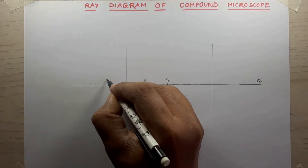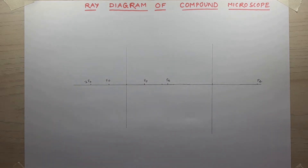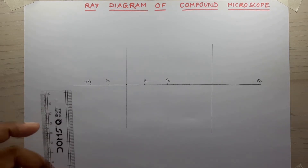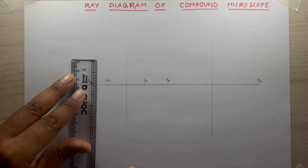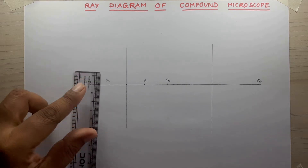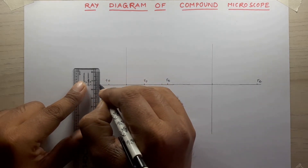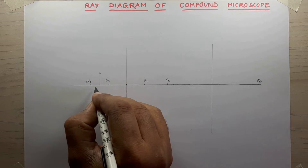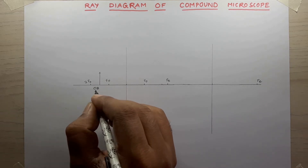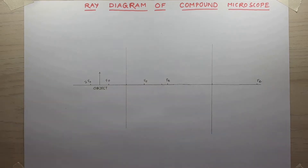This will be twice the focal length. Remember, for the objective lens the object will be between 2f and f. So I will create an object of one and a half centimeters. This is my object.